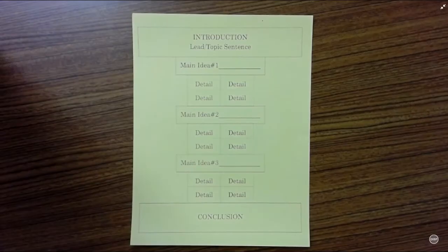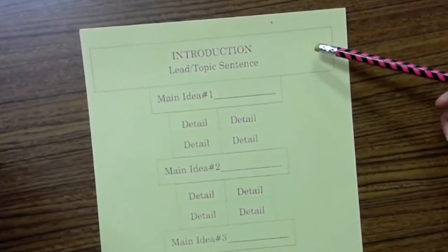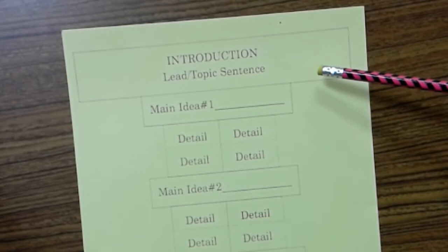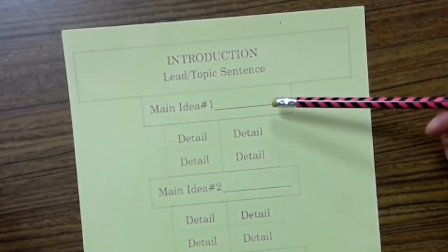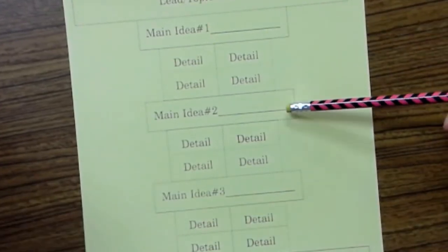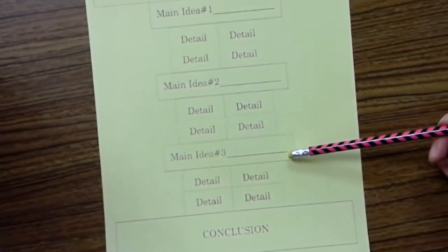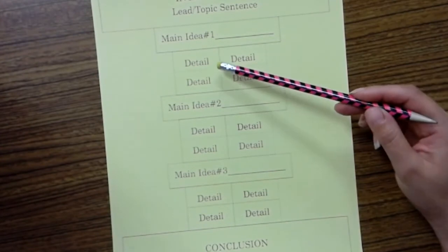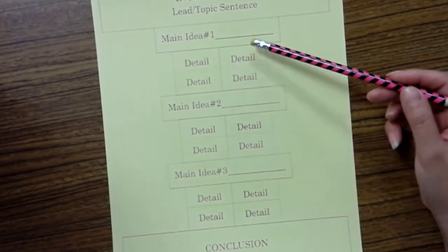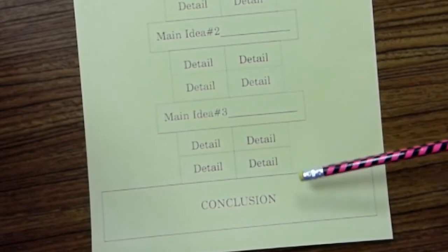Today we're going to learn about the expository pillar, a tool useful for fourth grade writing here in Temple ISD. The expository pillar includes an introduction that begins the piece, then main idea one, main idea two, and main idea three, each with supporting details. The story ends with a conclusion.